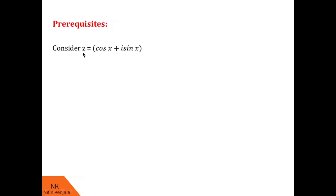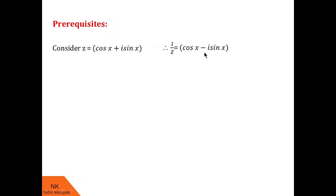Let us first understand prerequisites. We will see formulas that are helpful to expand functions of the type cos raised to nx and sin raised to nx. Let us consider complex number z whose polar form is cos x plus i sin x. Then 1 by z is cos x minus i sin x. To understand why, note that 1 by z is z inverse, so z inverse is cos x plus i sin x raised to minus 1. By De Moivre's theorem, this equals cos x minus i sin x.